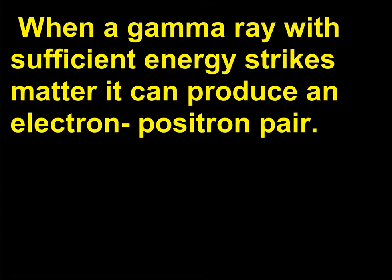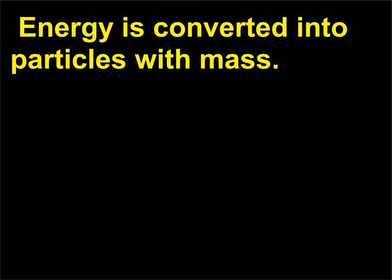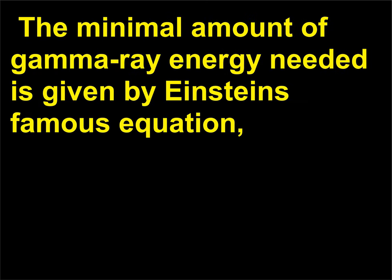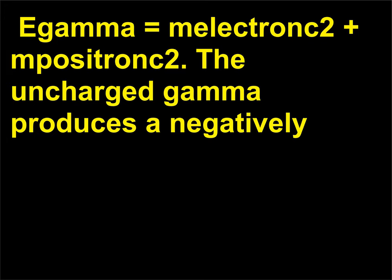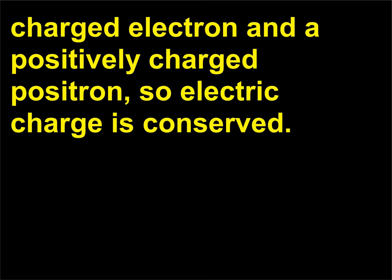When a gamma ray with sufficient energy strikes matter it can produce an electron-positron pair — energy is converted into particles with mass. The minimal amount of gamma ray energy needed is given by Einstein's famous equation: E_gamma = m_electron c² + m_positron c². The uncharged gamma produces a negatively charged electron and a positively charged positron, so electric charge is conserved.